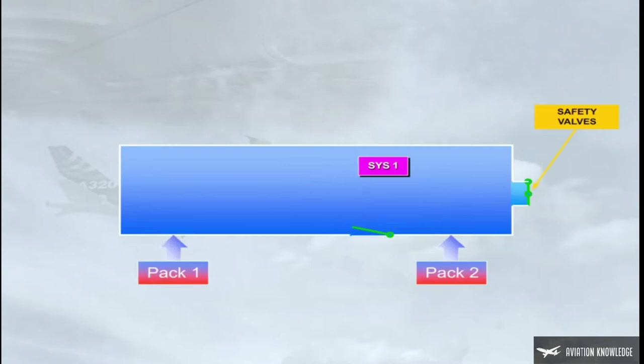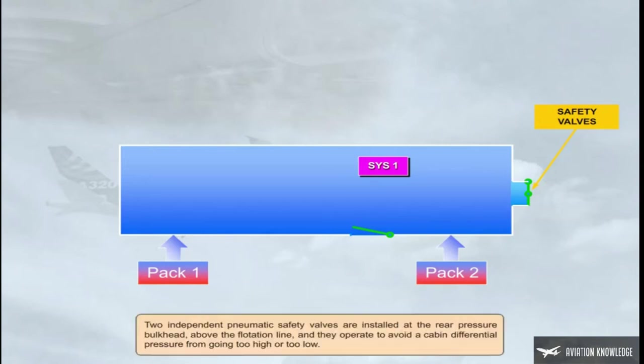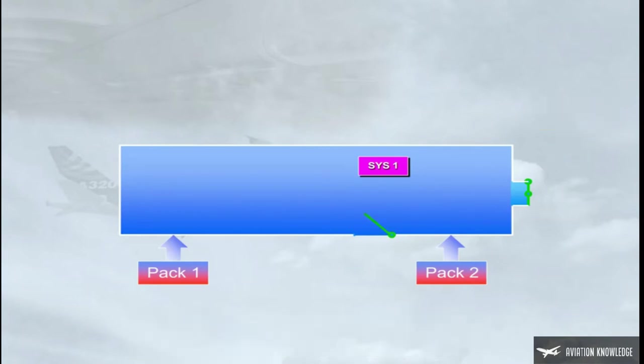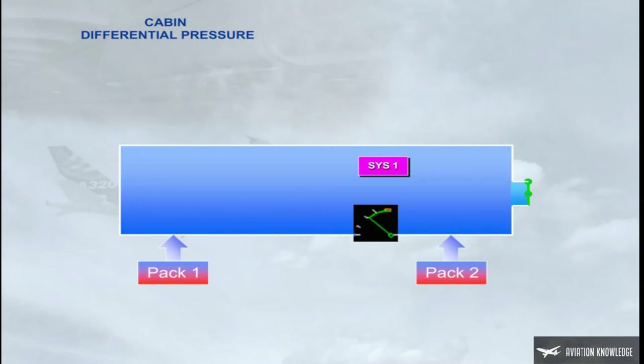Two independent pneumatic safety valves are installed at the rear pressure bulkhead above the flotation line, and they operate to avoid a cabin differential pressure from going too high or too low. Let us look at the operation of the outflow valve for an aircraft in cruise and what happens to cabin differential pressure, cabin altitude, and cabin vertical speed.